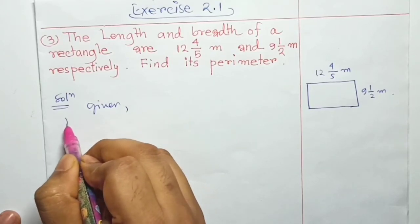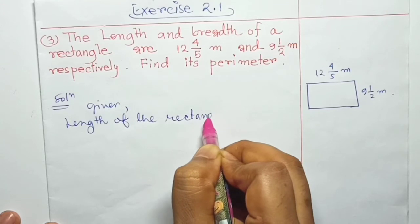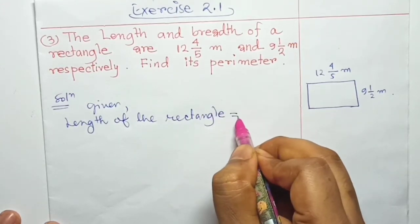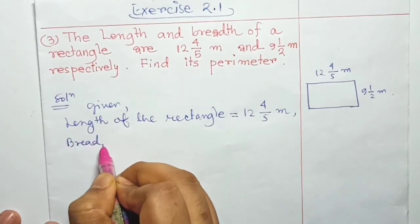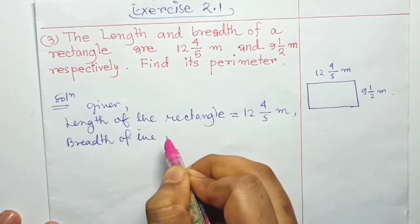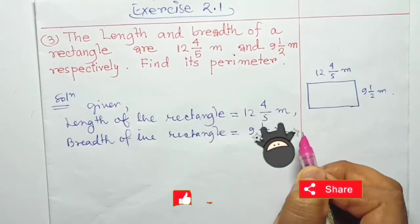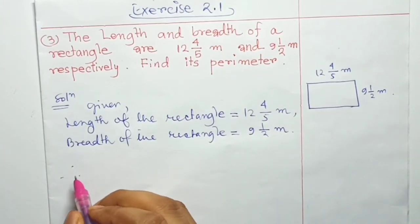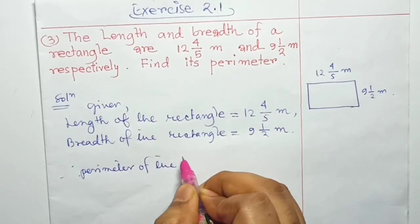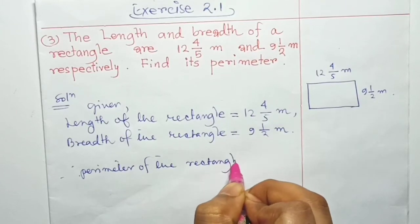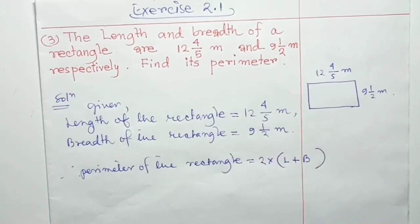Given: length of the rectangle = 12 and 4/5 meter, breadth of the rectangle = 9 and 1/2 meter. Therefore, perimeter of the rectangle = 2(L + B), where L means length and B means breadth.